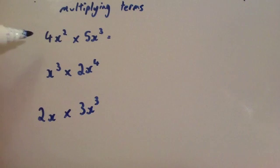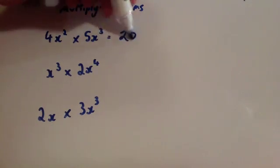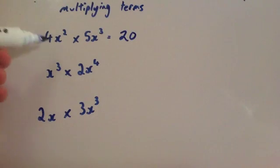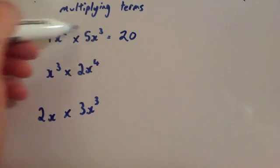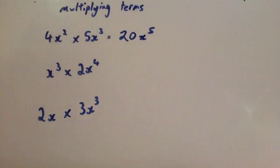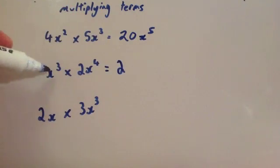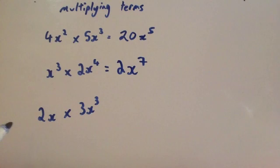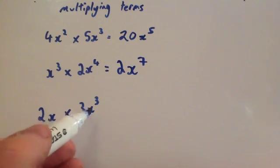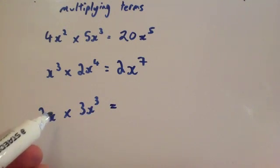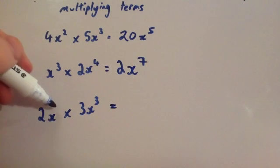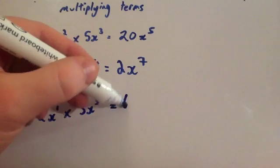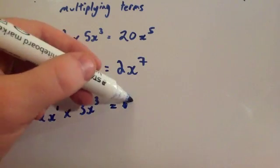Let's look at a few more examples. If you had 4x squared times 5x cubed, multiply the numbers in front: 4 times 5 is 20. Then from the indices video, x squared times x cubed — you add the powers — giving x to the 5, so the answer is 20x to the 5. If you had 2x cubed times x to the 4, the numbers give 2, and x to the 3 times x to the 4 — adding powers — gives x to the 7.